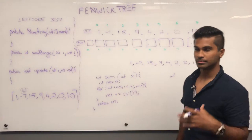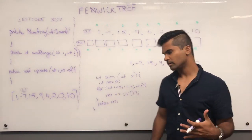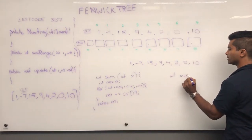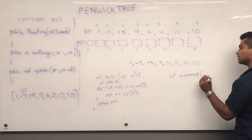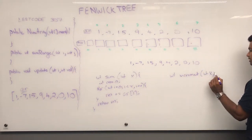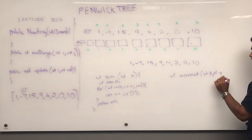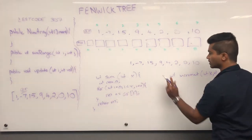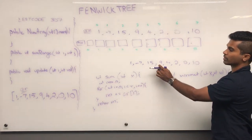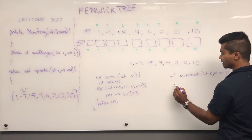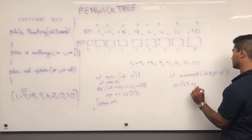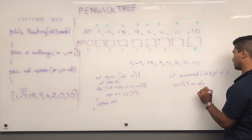Another commonly used operation on an array is increment — int x and int val. If someone wanted to increment this by 10, they could just say ar[x] is incremented by val. This is void.